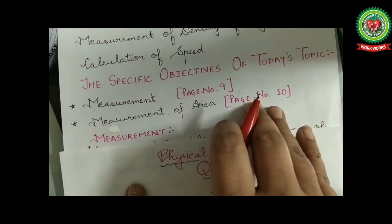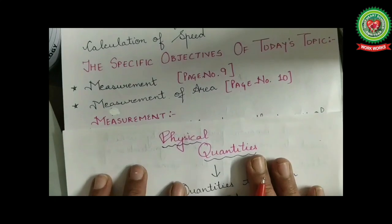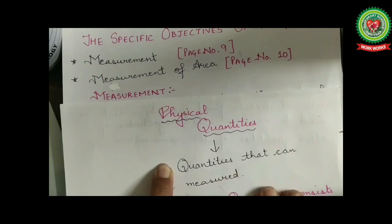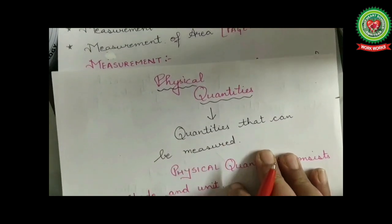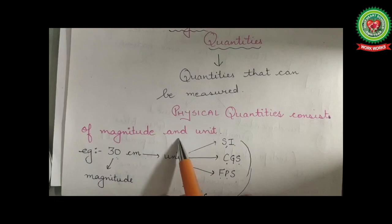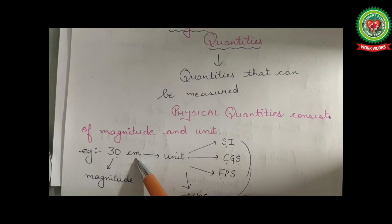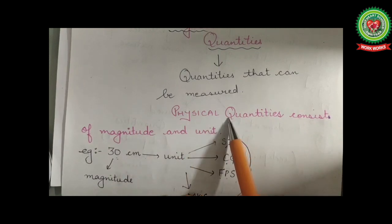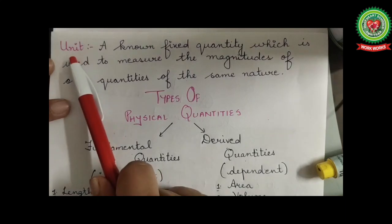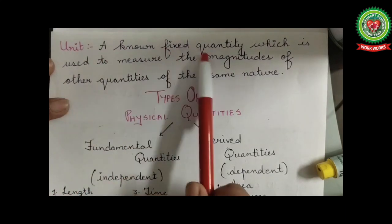Our first topic for today is measurement. Before starting, we should know what are physical quantities. Physical quantities are the quantities that can be measured. Physical quantities consist of magnitude and unit. For example, 30 centimeters represents length, which is a physical quantity — 30 is the magnitude and centimeter is the unit.